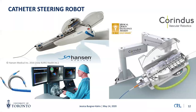Continuum robots are not new in surgery. Surgeons already use flexible tools like catheters — a catheter is essentially a continuum robot with just two degrees of freedom, bending at the tip and pushed forward into the vasculature. Hansen Medical and Corindus, now owned by Siemens, have built catheter steering robots so the surgeon doesn't have to be in the same room as the patient during fluoroscopy. This is a continuum robot with not too many degrees of freedom — a translational stage moving the catheter back and forth with tip bending.